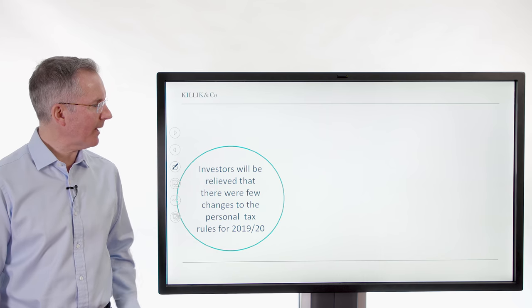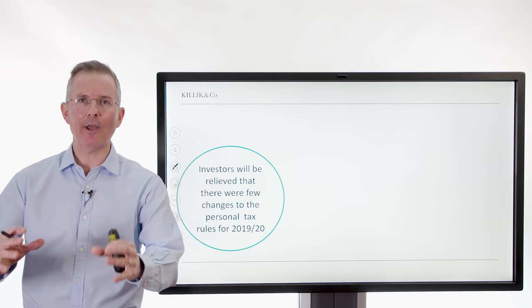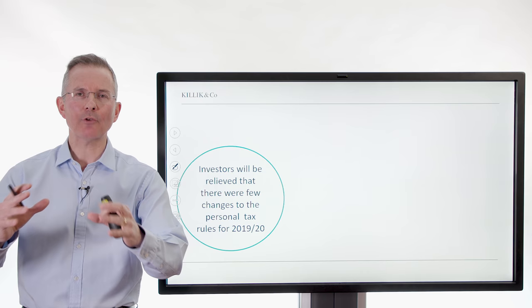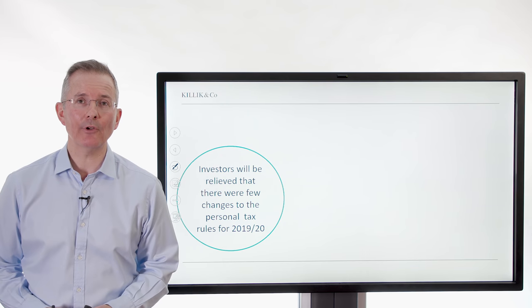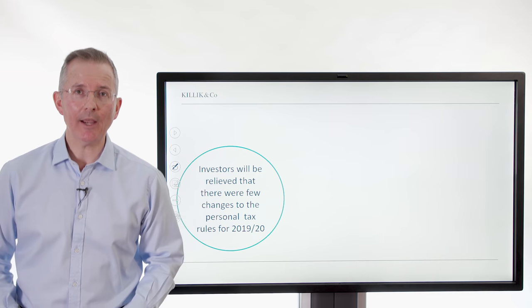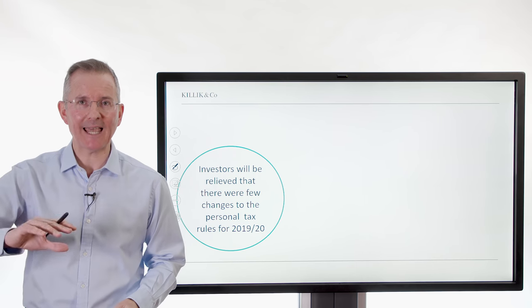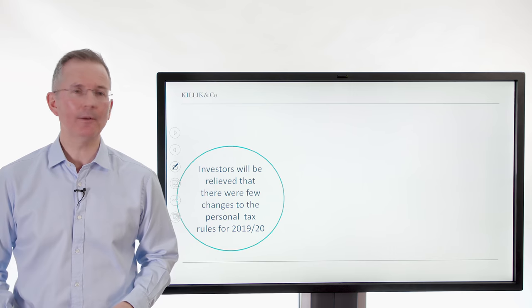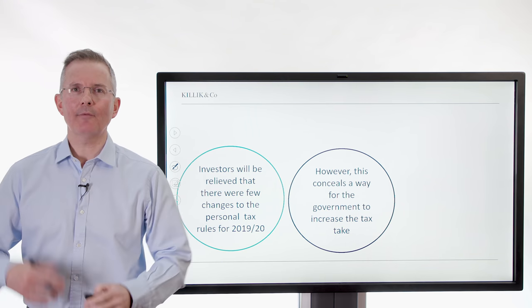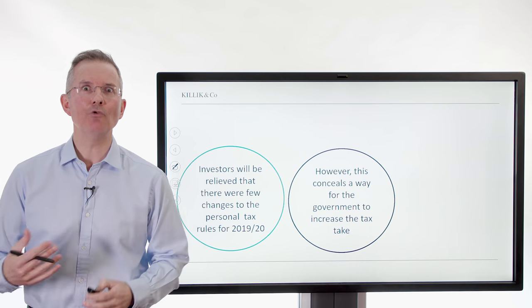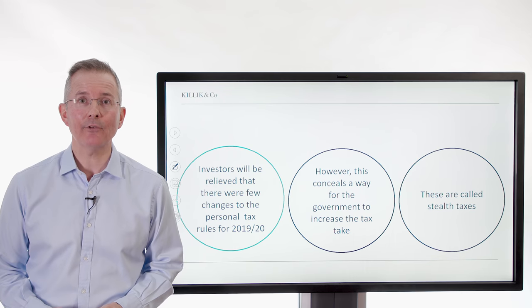The background is this: investors will be relieved to know that there were few publicised changes to tax rates and thresholds as we went past the 5th of April 2019. In an earlier video I covered some of the changes to income tax, capital gains tax, inheritance tax, and so on. But there are other ways for the government to increase their tax take in real terms, and these are loosely known as stealth taxes.